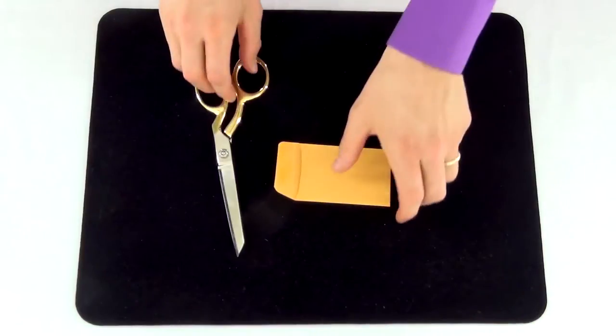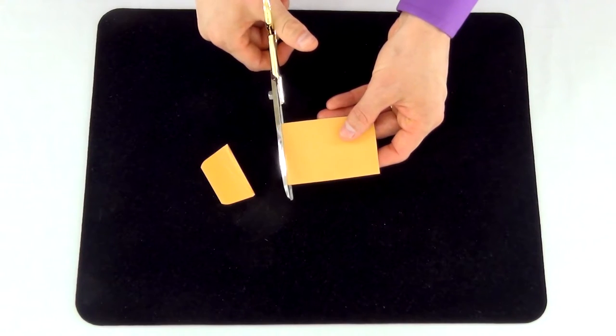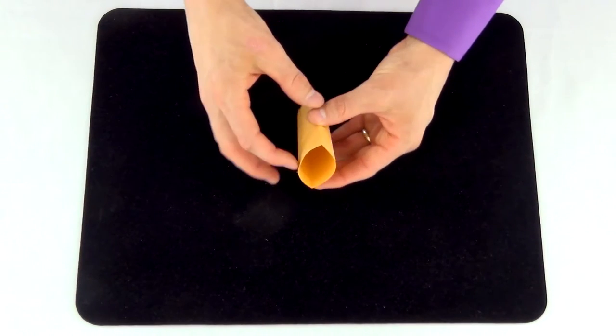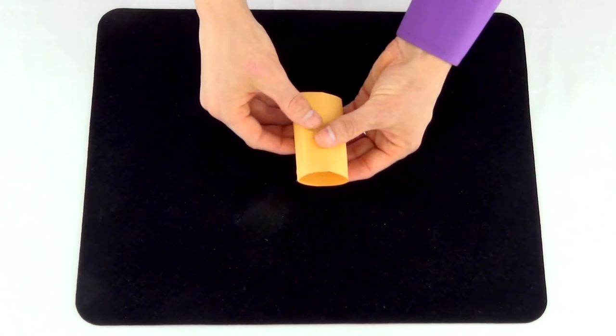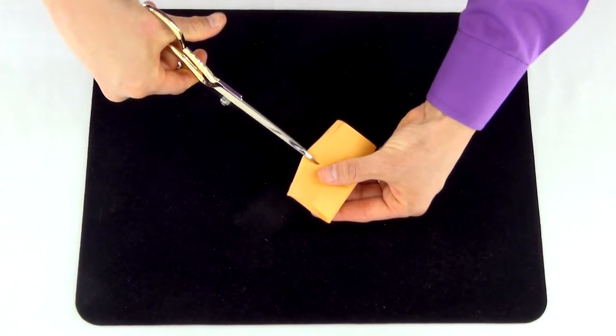To set up for this trick, grab a coin envelope and use your scissors to cut off the ends of the envelope. Open the envelope up and use your scissors to carefully place a slit into the back of the envelope like you see here.